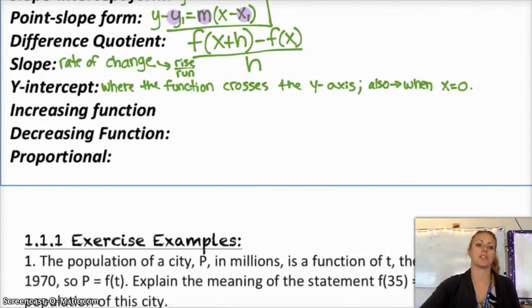Also the y-intercept, you can find it when x is set equal to zero. So if you have an equation, you could set x equal to zero and solve for y. And that would also get you your y-intercept because the y-axis is when x equals zero.